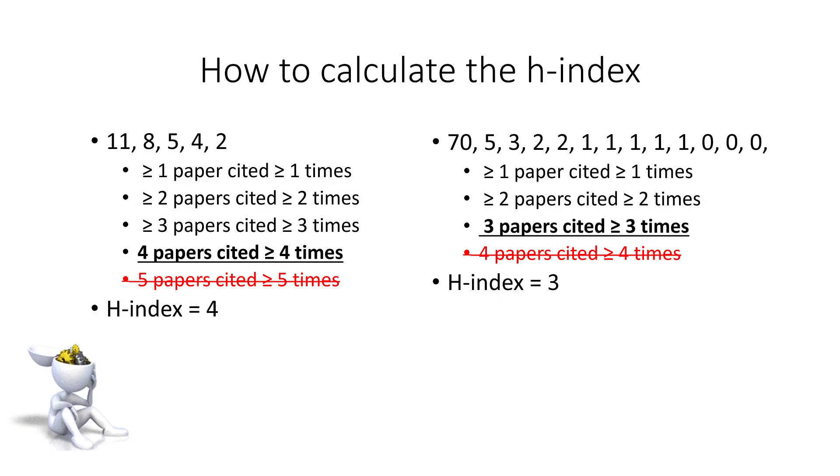In the final example, we have three papers cited at least three times, but we don't have four papers cited at least four times, so the H-Index is three.